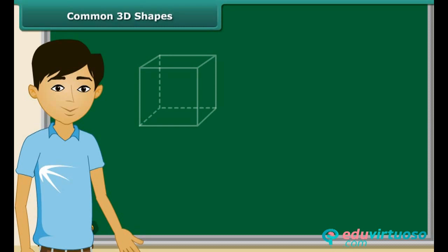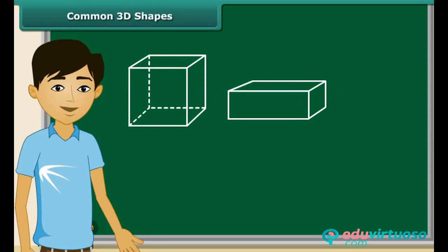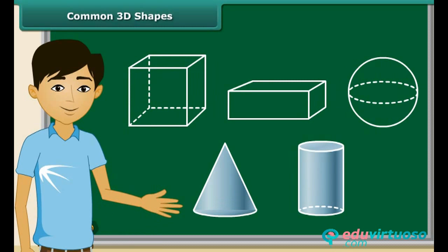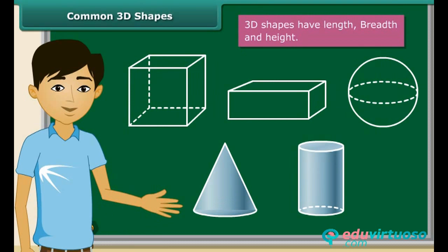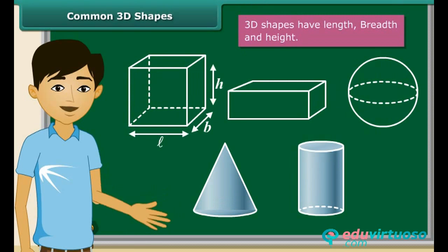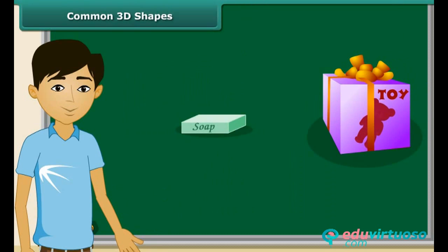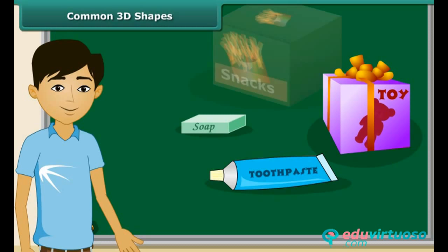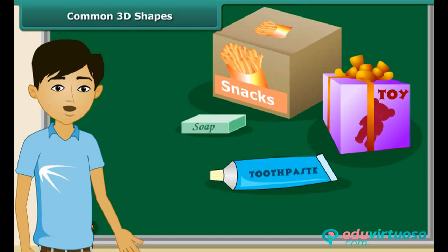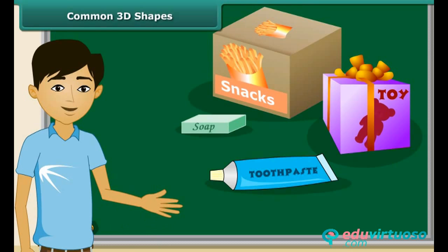Can you recall these shapes? Yes, these are 3D because they have length, breadth and height. Soaps, toys, pastes, snacks etc. often come in the packing of cuboidal, cubical or cylindrical boxes. Let us learn about their surface area and their volume.